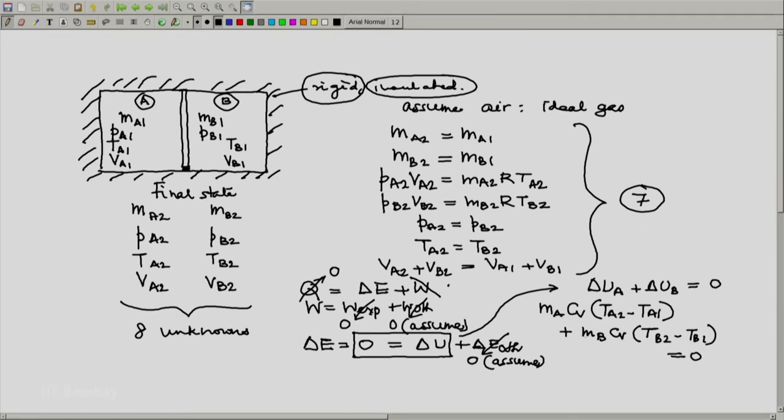Now, I have just used MA and MB here. Actually, they are, you could use MA1 or MB1. But since MA1 and MB1 are the same thing as MA2 and MB2, you could use either here 1 or you can put 2 there. It does not matter. This is the 8th equation.